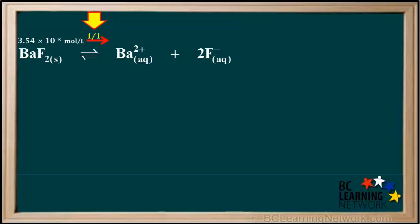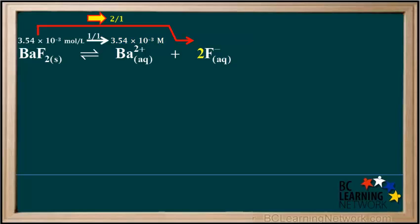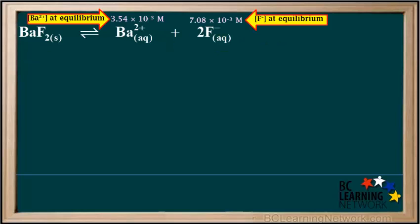The mole ratio of Ba²⁺ to BaF₂ is 1 to 1, so the concentration of Ba²⁺ is 3.54 × 10⁻³ M. The coefficient 2 on F⁻ tells us the mole ratio of F⁻ to BaF₂ is 2 to 1, so the concentration of F⁻ in a saturated solution is 2 × 3.54 × 10⁻³, which equals 7.08 × 10⁻³ M. These are the equilibrium concentrations of Ba²⁺ and F⁻.